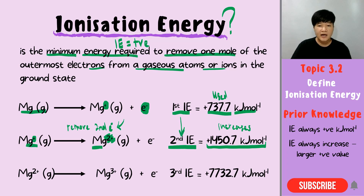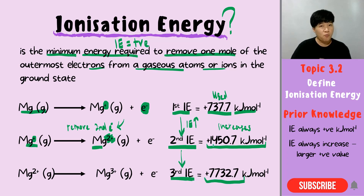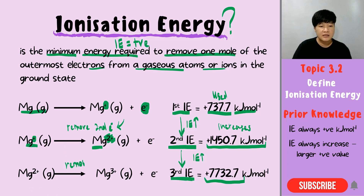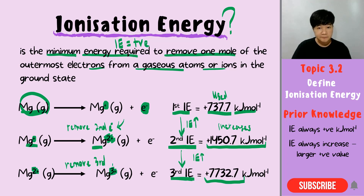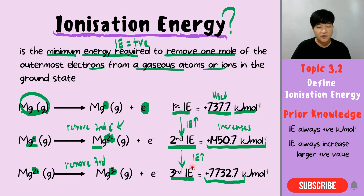From the first IE to the second IE, your ionization energy increases. The same thing happens when you move to your third ionization energy. The value increases from 1400 — right now I need about 7700 kJ/mol. So your ionization energy increases again when you remove the third electron. The third electron of the magnesium gaseous atom is removed from Mg2+ to become Mg3+. Moving from the first IE to the second IE to the third IE, you realize that your ionization energy increases. This is what we call successive ionization energy.